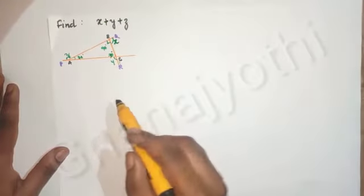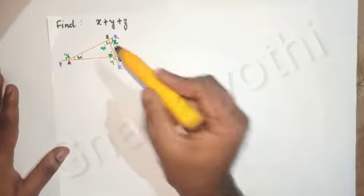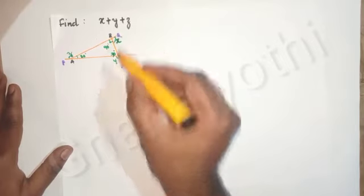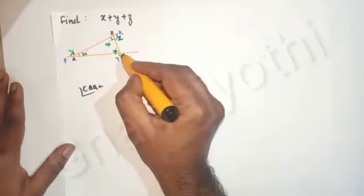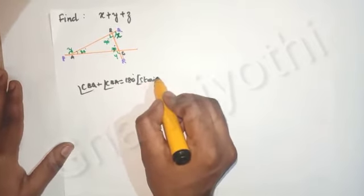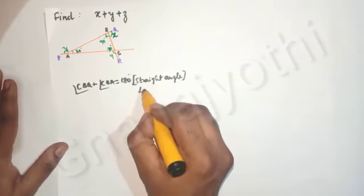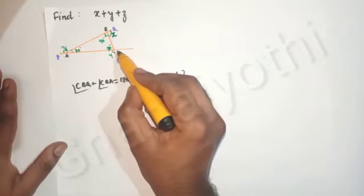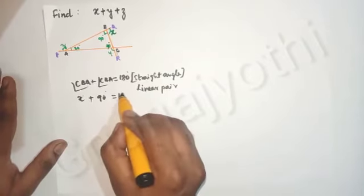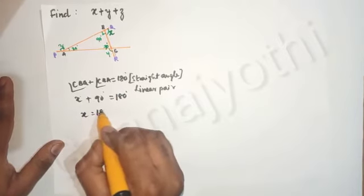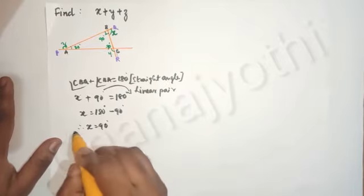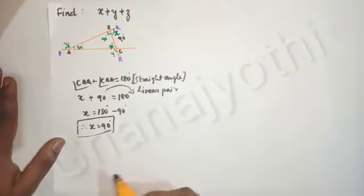Now let us find the value of x plus y plus z. Angle x plus angle 90 degrees makes one straight angle. So angle CBQ plus angle CBA is equal to 180 degrees because of a linear pair. Angle CBQ is x, and angle CBA measures 90 degrees, so x plus 90 degrees equals 180 degrees. Transposing 90 degrees to the right hand side, x is equal to 90 degrees.